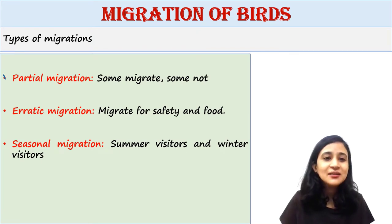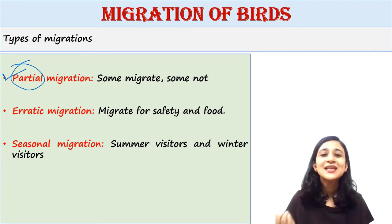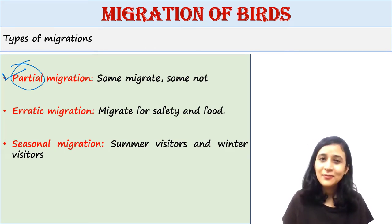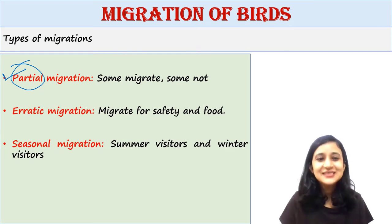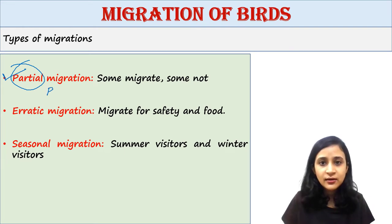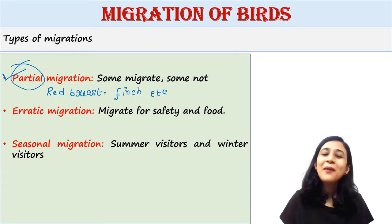Next is partial migration. Partial means not all — only some of them. Sometimes within a species, not all birds are migratory; some migrate and some do not. This is known as partial migration. Examples include the red-breasted finch, which are partial migrants.